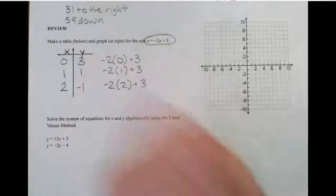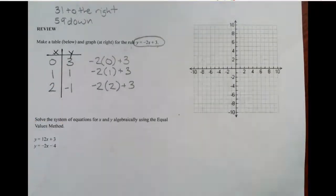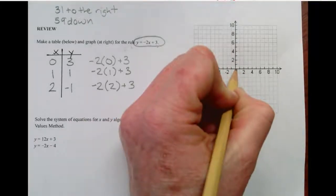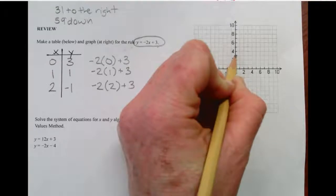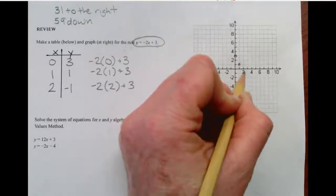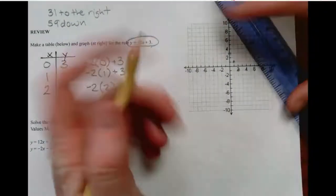Now, if I'm going to graph, there's two ways to graph. I can plot these points and connect the dots, which let's go ahead and do that first. So I have 0, 3. So removing 0 and then up 3. And then I've got 1, 1, 2, negative 1. Go ahead and connect the dots.